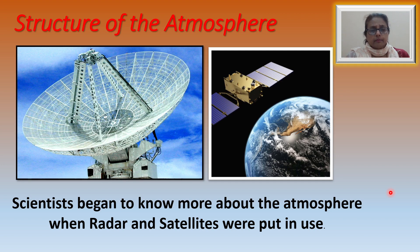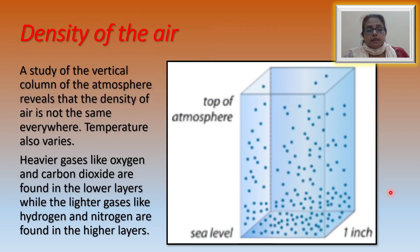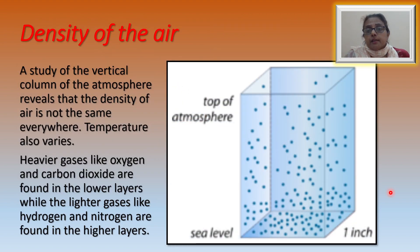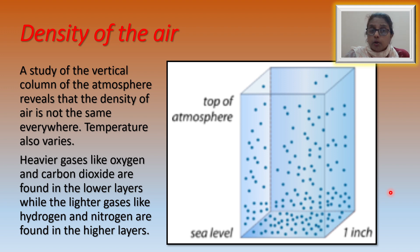A study of the vertical column of the atmosphere explains that the density of the air is not the same everywhere. Temperature is also not the same — it keeps on varying from place to place.